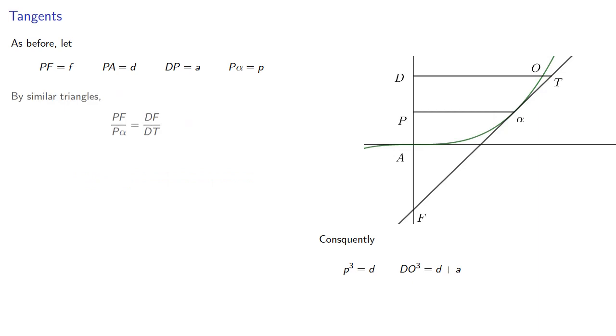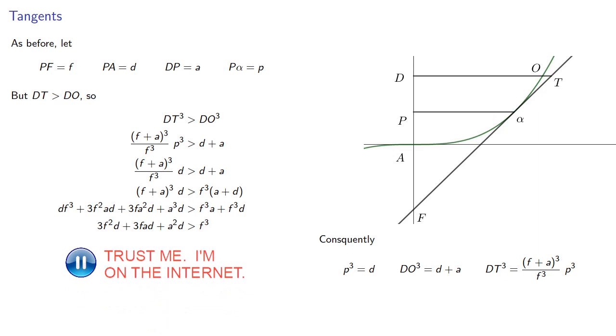Again, by similar triangles, PF is to P alpha as DF is to DT. And we know PF and P alpha, and if we look at our picture, DF is going to be F plus A, and DT is, well let's leave that alone and solve for it. And the cube will be, but our tangent line is outside of the curve, so DT has to be greater than DO, which means that DT cubed must be greater than DO cubed. So we can substitute in our values, and do a little bit of algebra. What's important is to recognize that this inequality must be true for all A greater than 0. So if we let A equal to 0, then we're able to write the inequality. And so 3D must be greater than F.